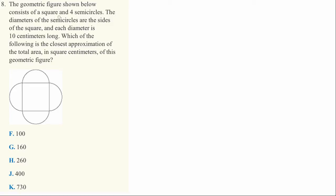The geometric figure shown below consists of a square and four semicircles. This is a half circle. The diameters of the semicircle are the sides of the square and each diameter is 10 centimeters long. Which of the following is the closest approximation of the total area in square centimeters of this geometric figure?